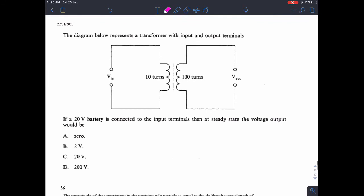Question 35. This is a transformer. The key thing about this question is this is a 20 volt battery. A battery is DC and it is not changing.